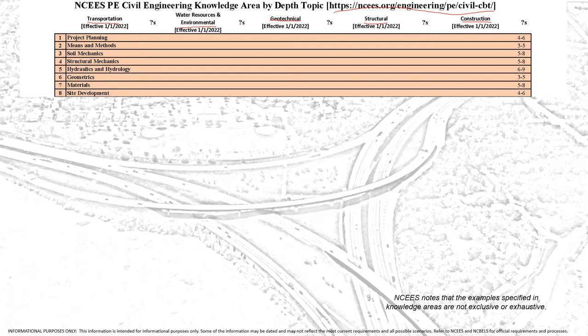For the breadth exam, typically referred to as the morning exam, there are eight topic areas and each one roughly has five questions each. It ranges from three to five up to six to nine questions among those eight topic areas, so everyone who takes the Civil Engineering PE exam will see these eight topic areas.